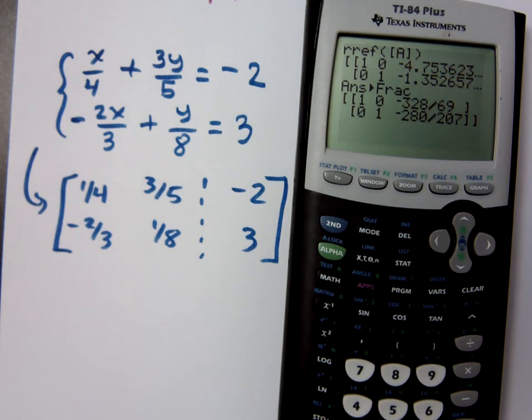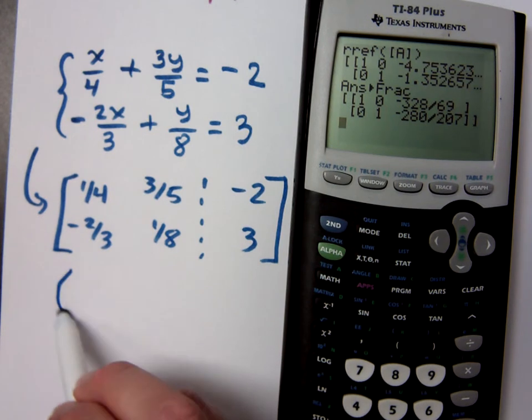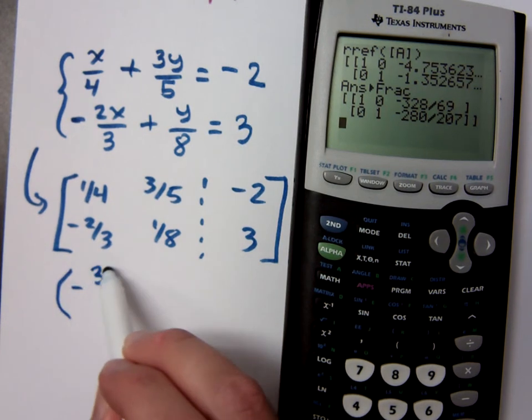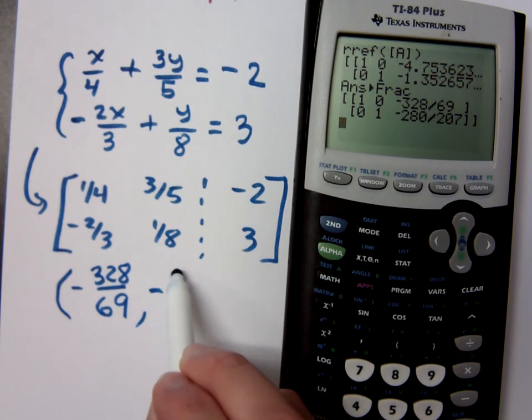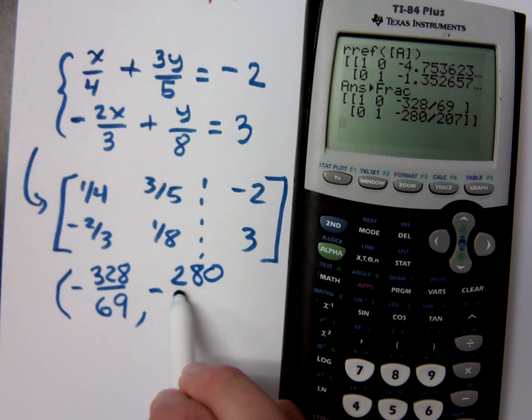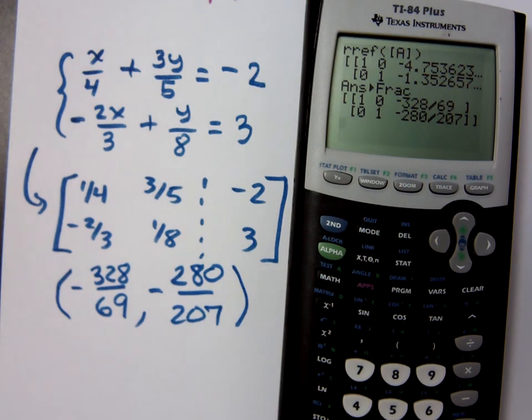Now this kind of goes back to what I was telling you before. Notice how 69 and 207. Well, 207 is a multiple of 69. 69 times 3 is 207. And so you find out that your solution for this system is negative 328 over 69 and negative 280 over 207. If it can be reduced.